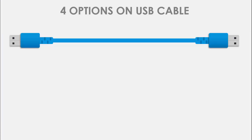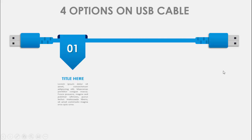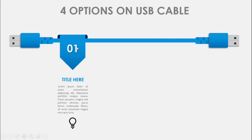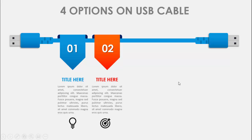In today's tutorial I'm going to show you how to make four options on USB cable infographics slide in PowerPoint. This is how the slide looks - I've created this USB cable design completely in PowerPoint. When I click it will show the first option with the title, detail text, along with the icon, and then when I click it will show different color combinations for each option.